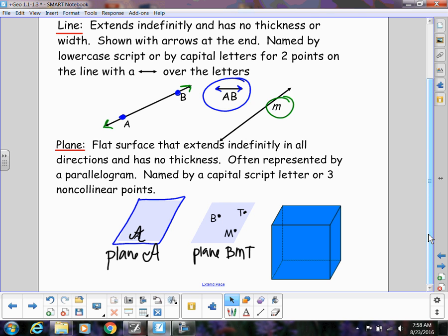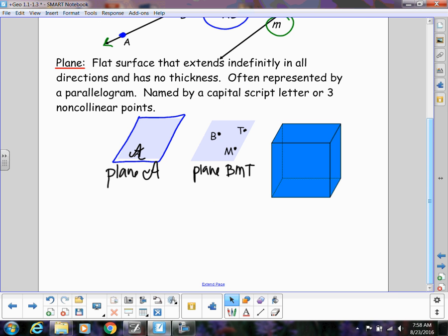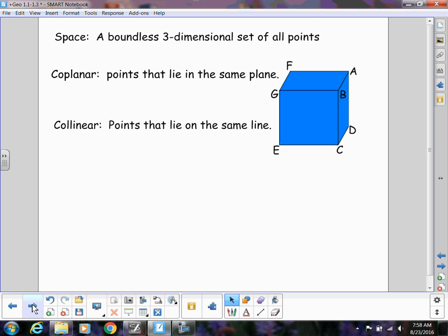A lot of times, too, we'll use planes when we are using cubes and boxes and things like that. So I might have the plane of this top surface of the box. Or you could have the front of the box be a plane. And then space. Space, when we say space, it's just a boundless three-dimensional set of all points. So any time you see that word, it just means all three-dimensional space that we're talking about.